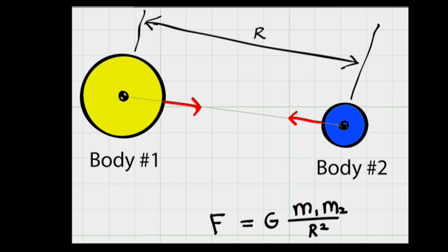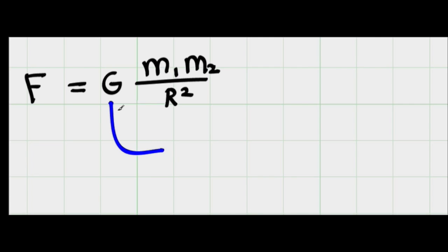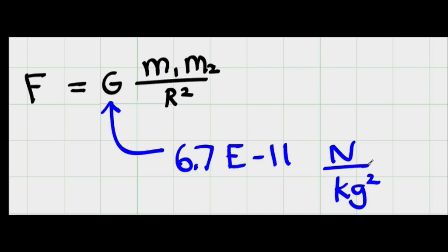The radius is the distance from the center of mass of body 1 to the center of mass of body 2. Now this constant, G, has a value of 6.7 times 10 to the minus 11. And the units are newtons meters squared, kilograms squared in the denominator.